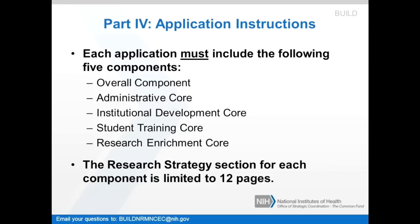These are complex multi-component applications. Each application must include the following five components: the overall component, the administrative core, the institutional development core, the student training core, and the research enrichment core. The research strategy section for each component is limited to 12 pages. Remember that different cores have different requirements and instructions. I highly recommend that potential applicants read the instructions carefully, and remember that the 12-page limit does not include the specific aims page.